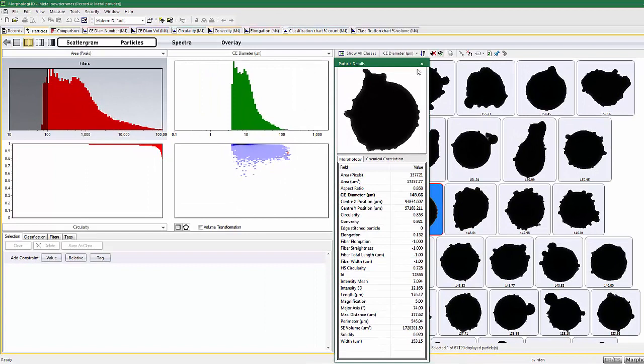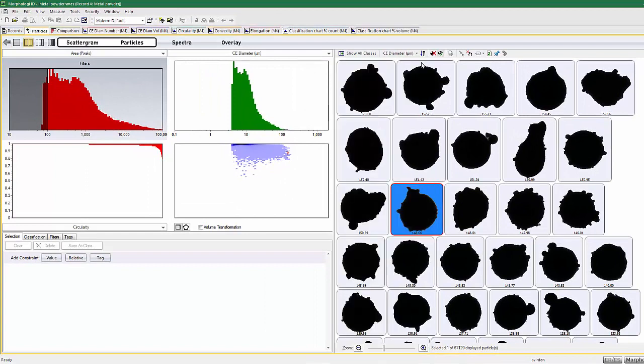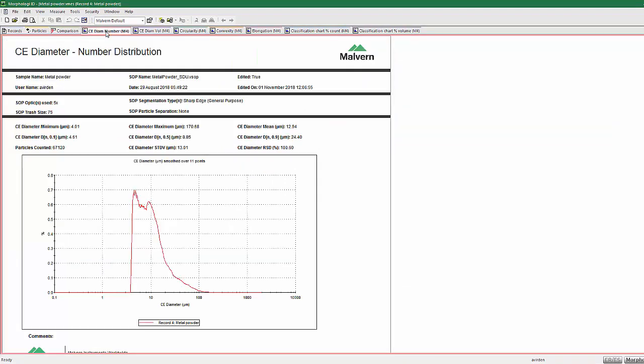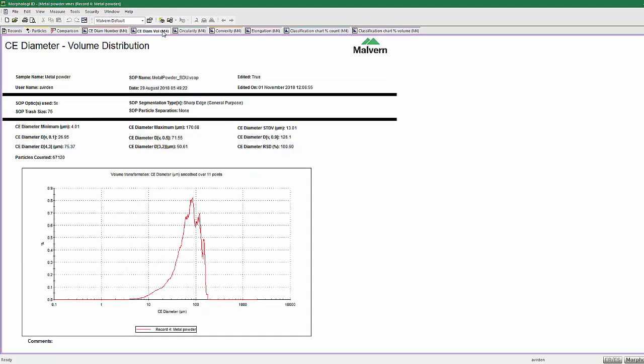As tens or hundreds of thousands of particles can be measured, statistically significant distributions of the size and shape parameters are produced, such as the circular equivalent diameter as a number distribution, or transformed to a volume distribution.